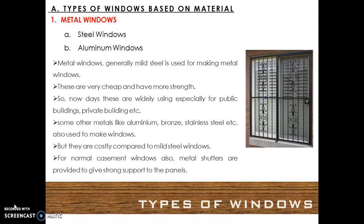Now we shall talk about the types of windows based on material. Metal windows include steel windows and aluminium windows. Generally, mild steel is used for making metal windows. These are very cheap and have more strength, so they are widely used, especially for public and private buildings. Other metals like aluminium, bronze, and stainless steel are also used to make windows, but they are costly compared to mild steel windows. For normal casement windows, metal shutters are provided to give strong support to the panels.